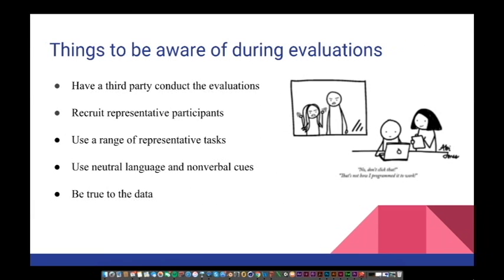There are a few things one should be aware of during evaluations. One suggestion is to have a third-party person conduct the evaluations. This helps in preventing bias. Additionally, the person conducting the evaluation should recruit participants that are not just fans or critics of your company or product. One should strive to use a range of tasks that are not just the best or worst of your product or service. It is important to use nonverbal and neutral language when directing the participant in a specific way. And finally, it is very important to be true to the data, rather than interpreting what the participant might be thinking.